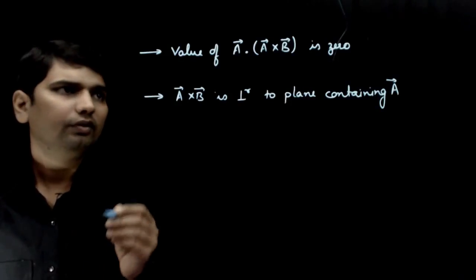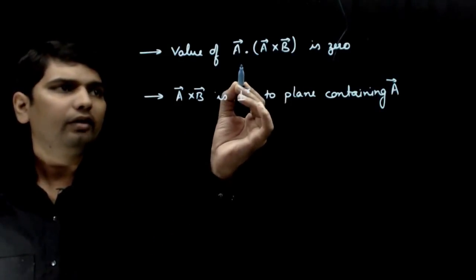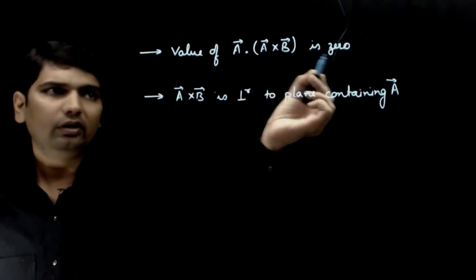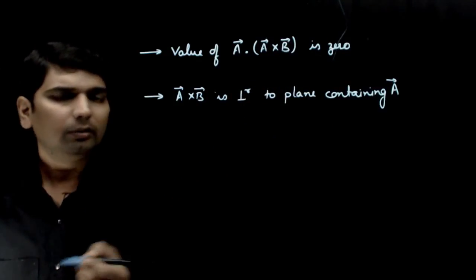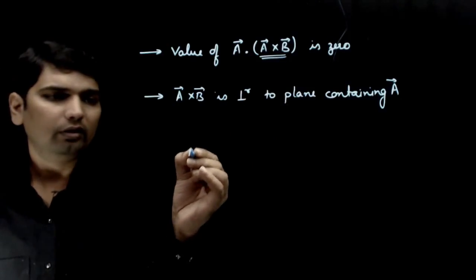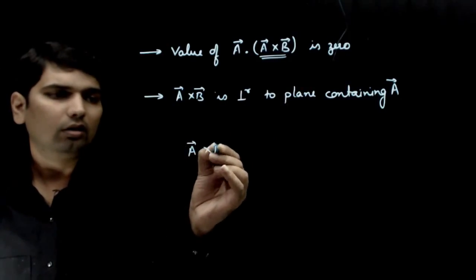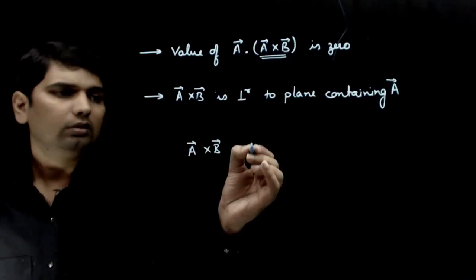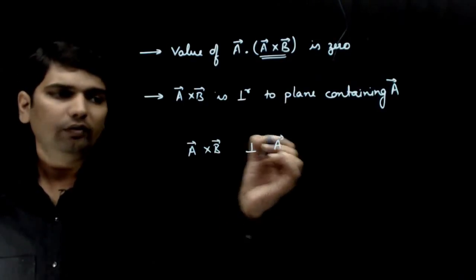In this problem, the first statement says A vector dot A vector cross B vector is zero. This statement is correct because A vector cross B vector is perpendicular to A vector.